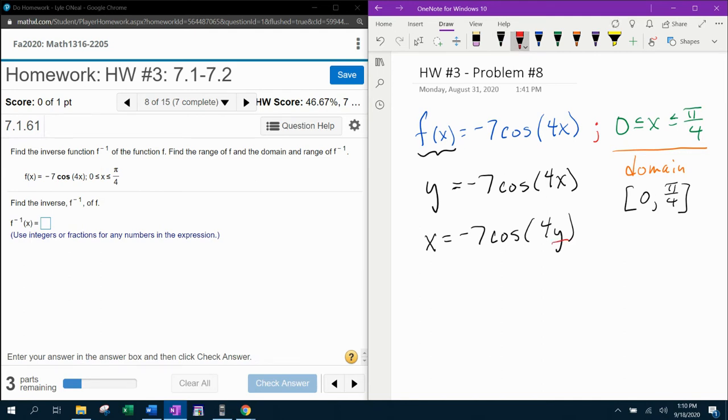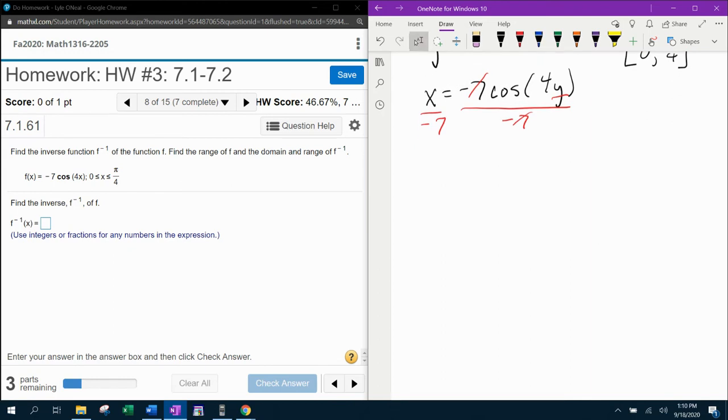So to get the y by itself, the first thing I'm going to have to get rid of is this lead coefficient. So we're going to divide both sides by negative 7. And that's going to give us negative x over 7 equals cosine of 4y. And then the next thing I need to get rid of to get the y by itself is the trig function. So we're going to bring the cosine to the other side, and that's going to magically turn it into inverse cosine. It's not magic, it's mathematics. Bringing the cosine to the other side makes it inverse cosine of negative x over 7 equals 4y. And the last step to isolate the y is to divide both sides by 4.